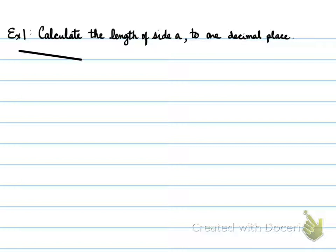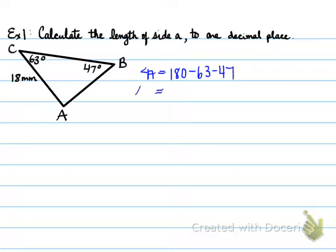Example one, calculate the length of side a to one decimal place. Here is our measurements. Notice you have two angles and one side. We use sine law. To know side a, we need angle A. We don't have it, but we can find angle A. Angle A equals 180 minus 63 minus 47.